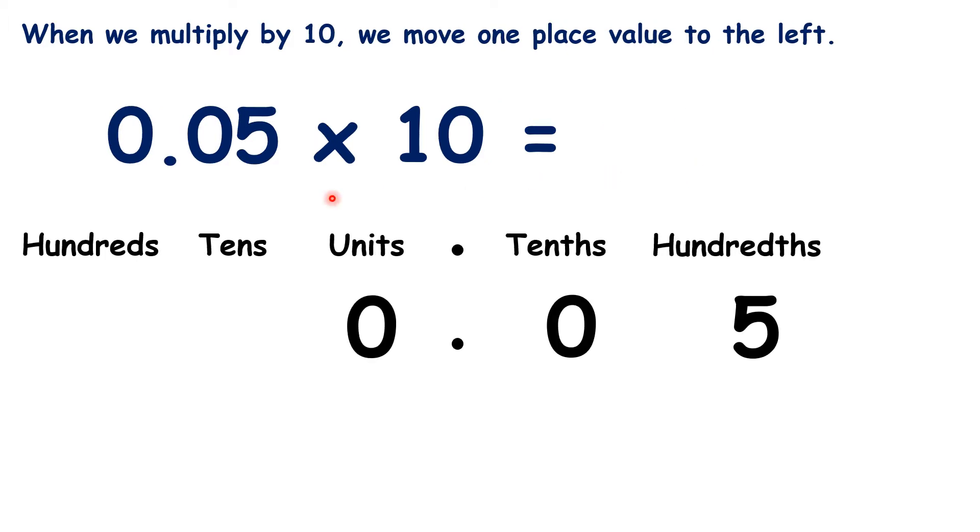Now we have 0.05 times 10. So let's move the digits to the left. We can ignore this 0 in our tens column. But if there's a 0 in the units column, we always keep it. We always still write the 0. So we have 0.5.